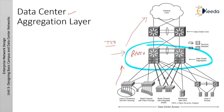The data center aggregation layer typically provides Layer 3 connectivity from the data center to the core and maintains connection and session state for redundancy. Depending on the requirement and the design, the boundary between Layer 2 and Layer 3 at the data center aggregation layer can be in the multi-layer switches, the firewall, or the content switching devices in the aggregation layer depending on the data center application. The aggregation layer might also need to support a large spanning tree processing load.